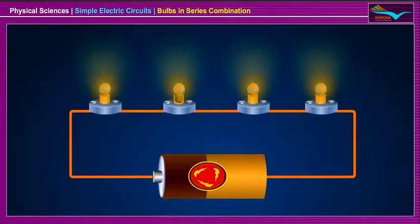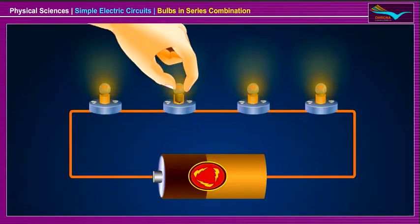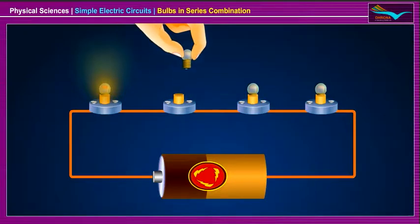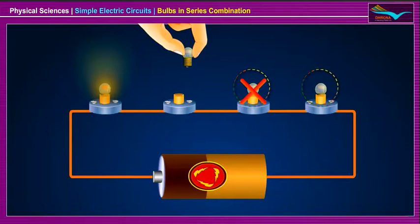When a number of bulbs are connected in series in a circuit, if one of them is removed or if it fails to work, the rest of the bulbs will not glow. This is because removal of the bulb or bulb failure causes a break in the circuit.